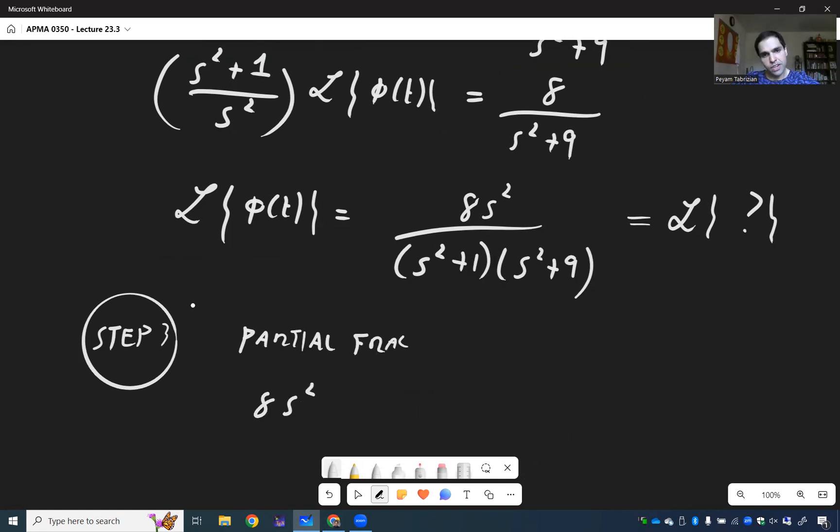So 8s² over (s² + 1)(s² + 9). That gives you, again, I'm going to split this up.